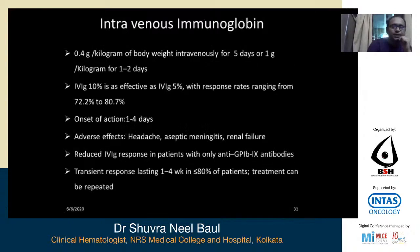IVIG dose is 0.4 g/kg body weight for five days, or 1 g/kg for one to two days. A 10 g dose is as effective as 5 g, with a response rate of 72% versus 80.7%. Onset of action is within four days. Adverse effects include headache, aseptic meningitis, and renal failure. Some studies show reduced IVIG response to anti-GP Ib/IX antibodies, but there is a mixture of antibodies making it difficult to ascertain. The transient response lasts only one to four weeks in 80% of patients and can be repeated.